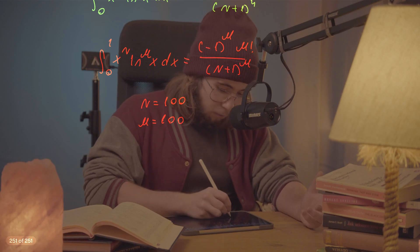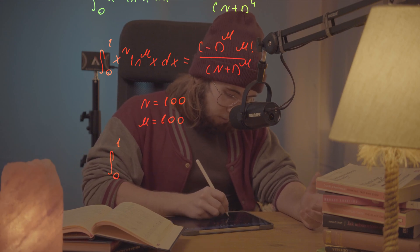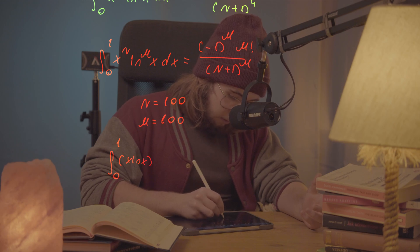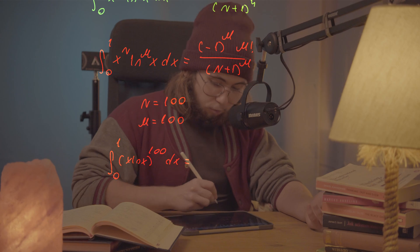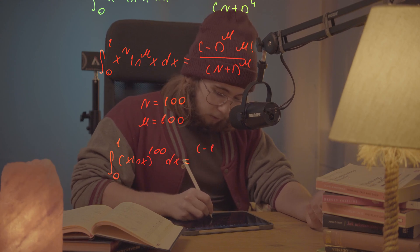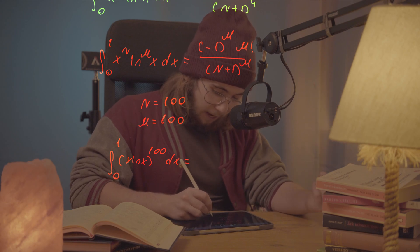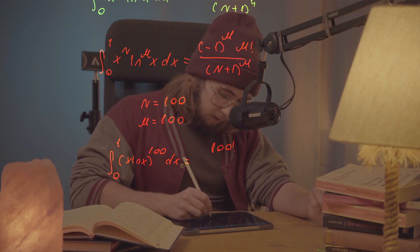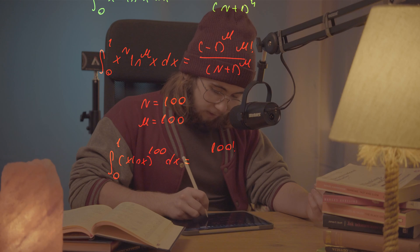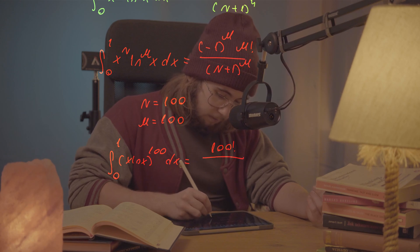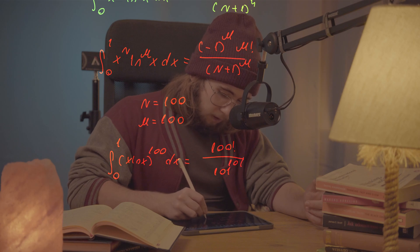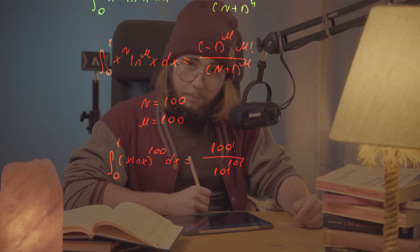And doing that will get me the integral between 0 and 1 of x ln(x) to the power of 100 dx is equal to negative 1 to the power of 100, which is an even number so this thing here disappears, times 100 factorial divided by 101 to the power of 101. And that is our answer.